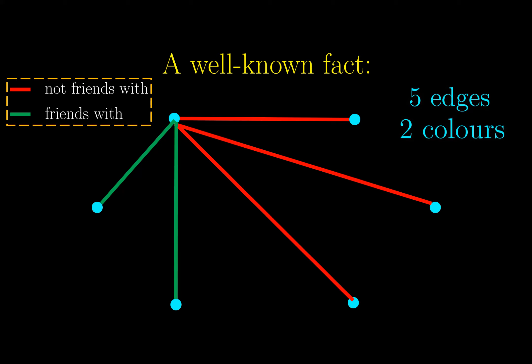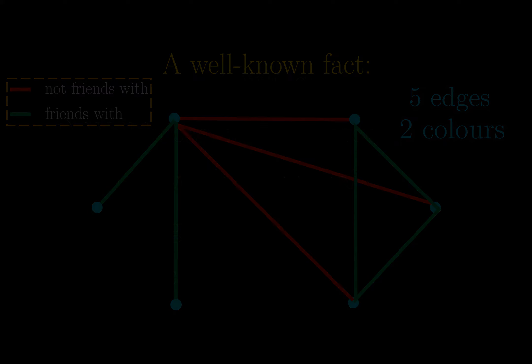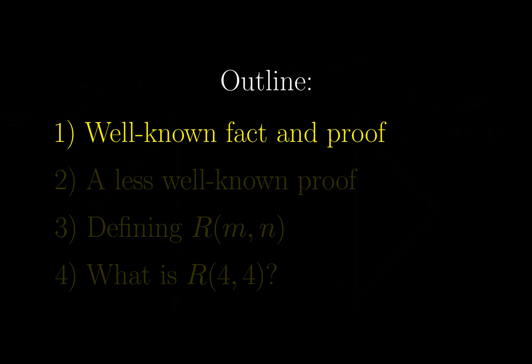Here, we choose the red color. The argument would be the same if the colors are reversed. Now consider the connections between these 3 vertices. If any of the connections is red, then we must form a red triangle. If not, then all the connections here are green, and we form a green triangle. So a triangle is inevitable in all cases.